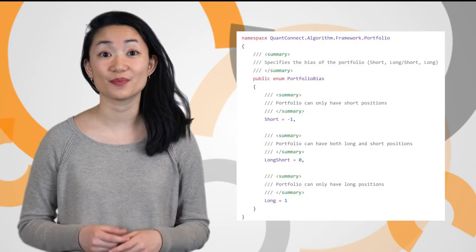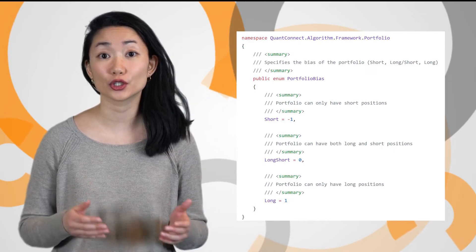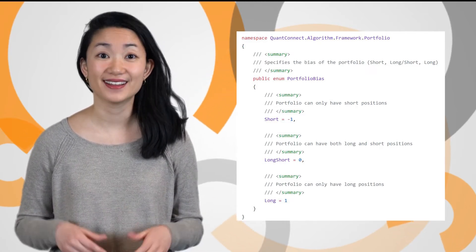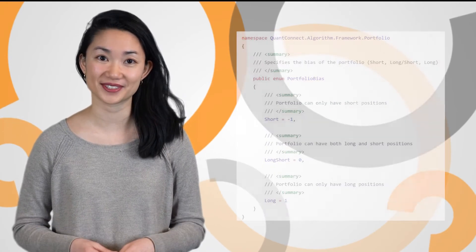Portfolio construction models now have a portfolio bias parameter to specify a short, long short, or long-only position strategy. This new parameter lets you selectively apply insights from your alpha models.